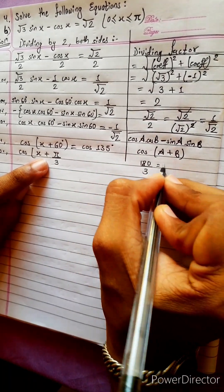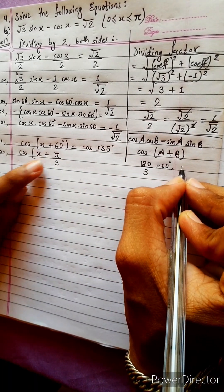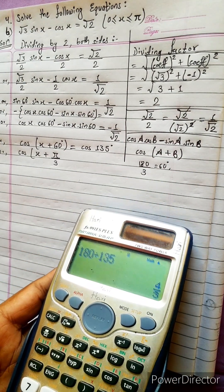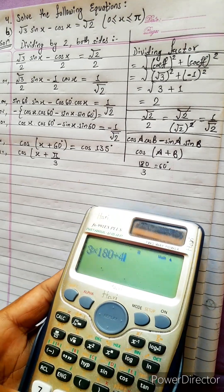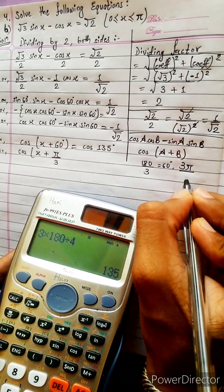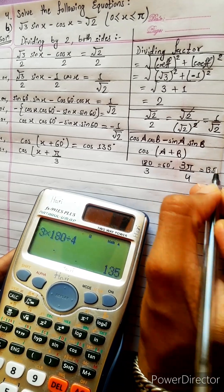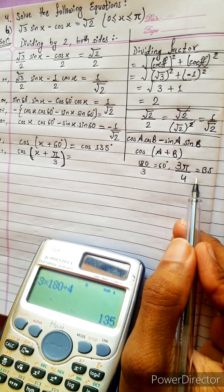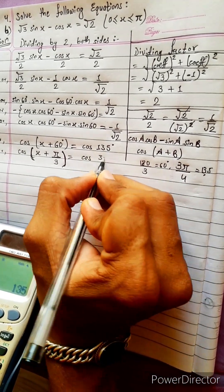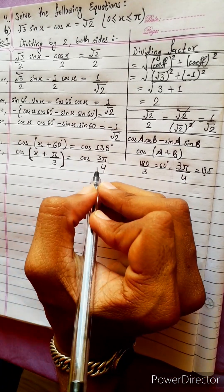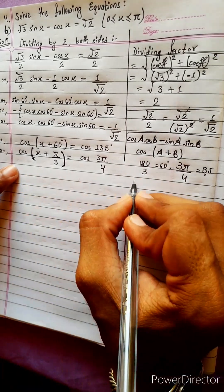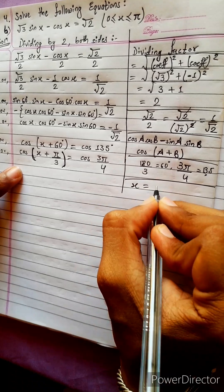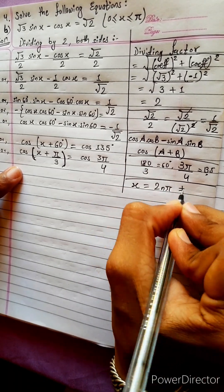Write in standard form: x plus 180 by 3. 180 by 3 is 60 degrees. And how much is 135? Let's check: 3 into 180 by 4 — yes, 3 into 180 by 4 means 135. So we will write here 3π by 4 means 135, so we will write 3π by 4. Now we can do one thing: one formula of cos. Standard formula — look here: x equals 2nπ plus minus theta. This is the standard formula, this is very very important.